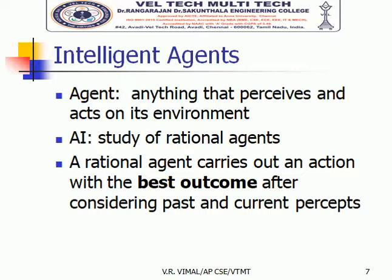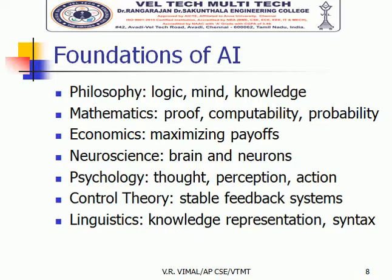Now we come to the topic of the intelligent agent. An agent is one which perceives the environment and acts upon it. Based on the percept taken and the agent program, the agent decides what kind of action has to be done. The rational agent carries out an action which gives the best outcome. The foundations of AI include philosophy, mathematics, economics, neuroscience, psychology, control theory, and linguistics — without these it is not possible to implement an AI system.